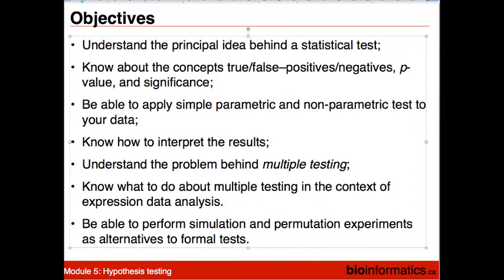We'll also have to talk about multiple testing, because in the age of high-throughput biology, we don't make a test once. If we make a significance test on results from a high-throughput gene analysis, in effect we are repeating the test 20,000 times or however many times our genes are represented. We'll have to talk about what to do about such multiple testing problems in the context of expression analysis.